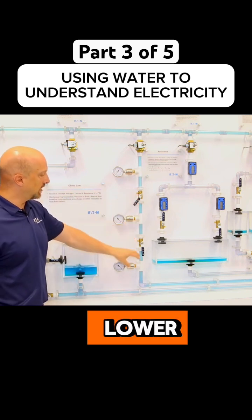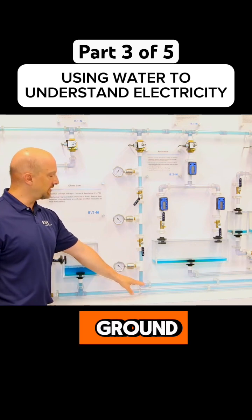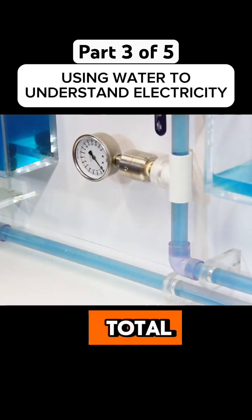And lower across these two. And I'll get down to my point down here, which is ground, and I'll have no pressure because that's my bottom of my total voltage divider.